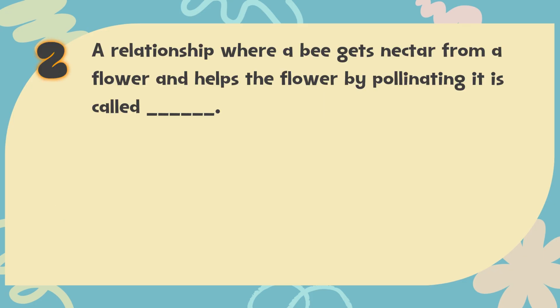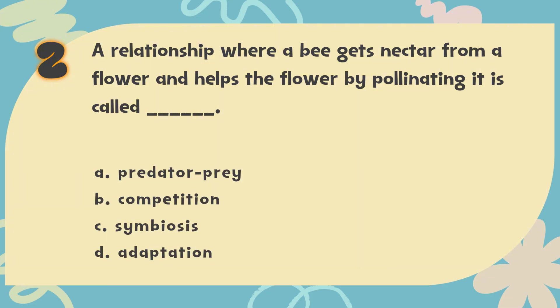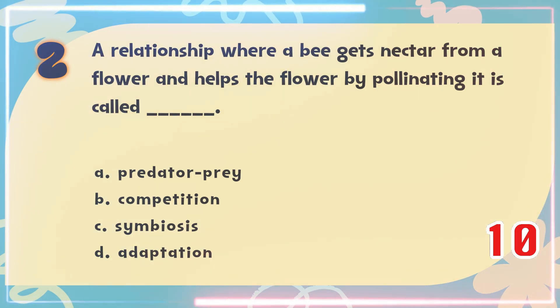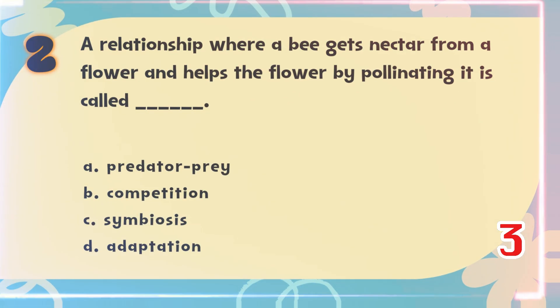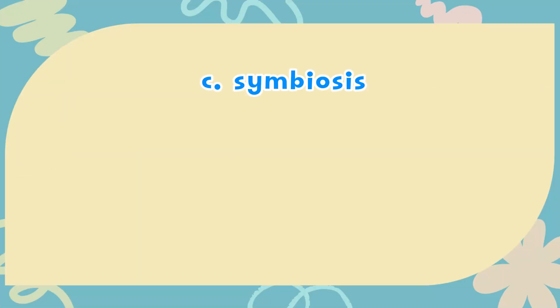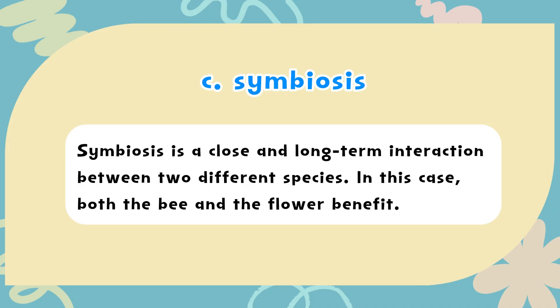Number 2. A relationship where a bee gets nectar from a flower and helps the flower by pollinating it is called blank. The choices are: A. Predator-prey, B. Competition, C. Symbiosis, D. Adaptation. The correct answer is C. Symbiosis. Symbiosis is a close and long-term interaction between two different species. In this case, both the bee and the flower benefit.